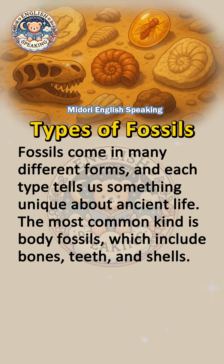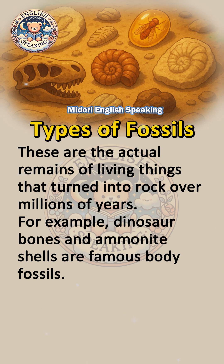Types of fossils. Fossils come in many different forms, and each type tells us something unique about ancient life. The most common kind is body fossils, which include bones, teeth, and shells. These are the actual remains of living things that turned into rock over millions of years. For example, dinosaur bones and ammonite shells are famous body fossils.